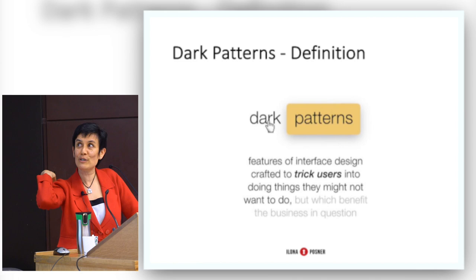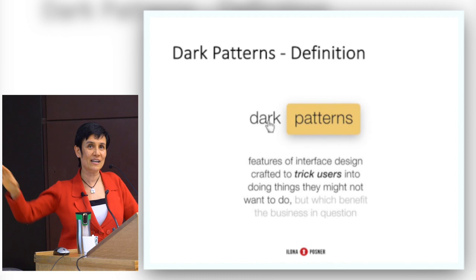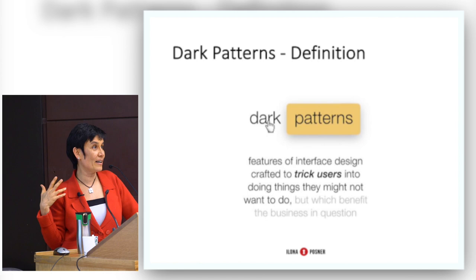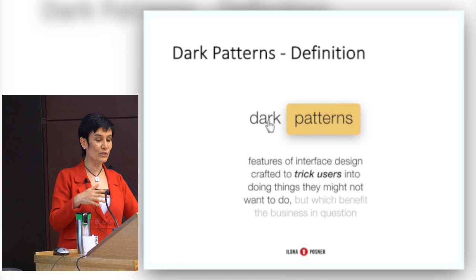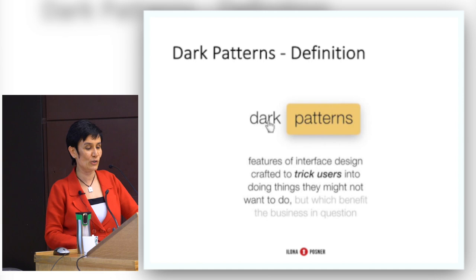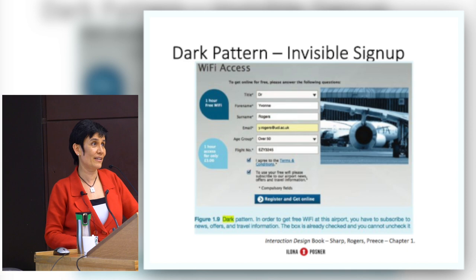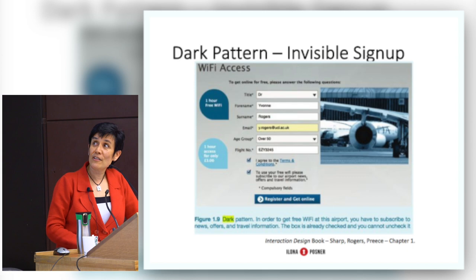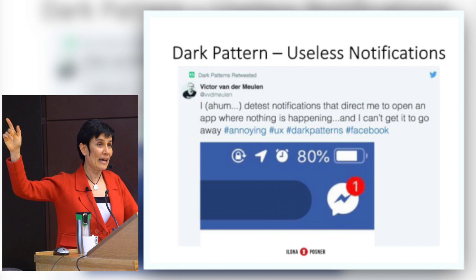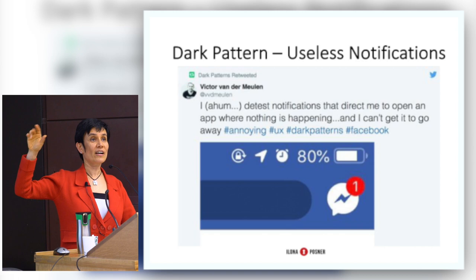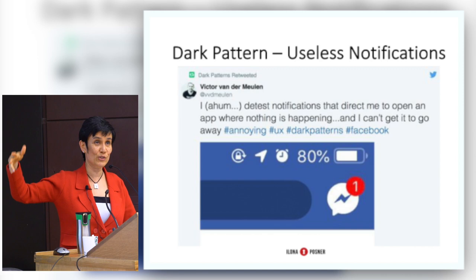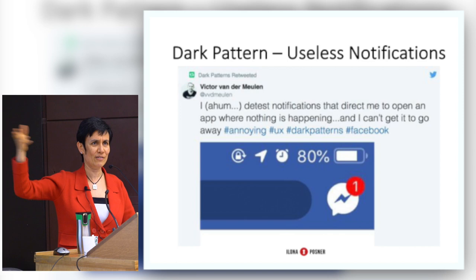That leads us to the concept of dark patterns. How many of you have heard of dark patterns? For those who haven't, darkpatterns.org is a great site that collects examples of design used against the intention of the user. Here's one: free Wi-Fi at an airport — except the only way to get it is to subscribe to their newsletter and give them your address to spam you, so it's not really free. Another: apps that send notifications with nothing to tell you, just wanting your attention, with no way to remove the notification. It happens in Slack — it's still red but won't go away.